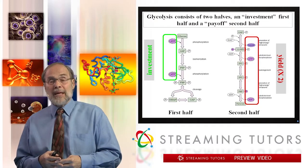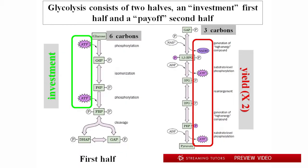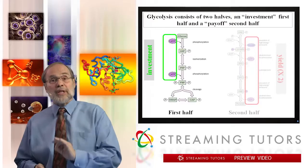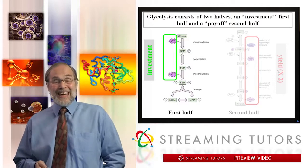The six-carbon glucose is actually transformed into two three-carbon units, and each of those three-carbon units separately goes through the second half. So in fact you have to multiply everything on the diagram by two. You invest two ATPs in the first half of glycolysis and you get four back out — a hundred percent profit, which works pretty well. Our focus today will be on the first half of glycolysis, and in the next segment we'll return to all the lessons the second half has to teach us.